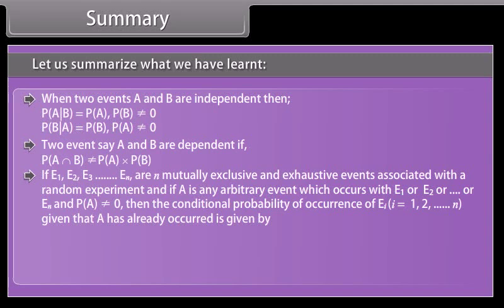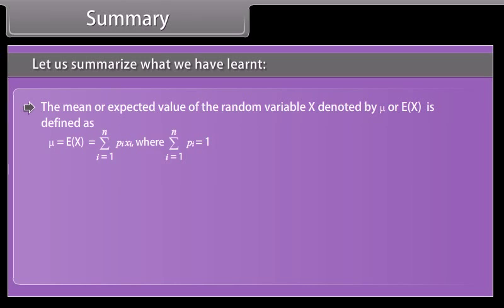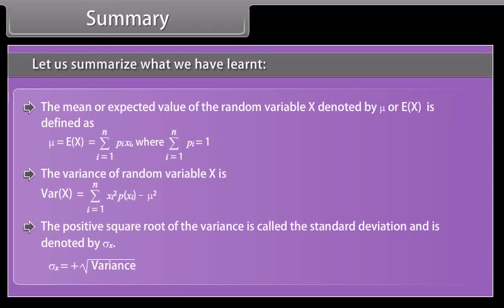If E1, E2, ..., En are n mutually exclusive and exhaustive events associated with a random experiment, and A is any arbitrary event with P(A) ≠ 0, then P(Ei|A) is given by Bayes' theorem. The mean or expected value of X is μ = E(X) = Σ Pi·Xi. The variance of X is Var(X) = Σ (Xi−μ)²·P(Xi). The standard deviation is σX = √Var(X).